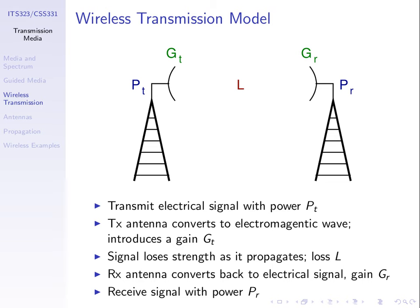Here's a more mathematical view of those components. We start with some signal at some power level PT, the transmit power. We'll see that the antenna effectively acts like an amplifier — it has some gain. When we analyze how far we can transmit, we treat the antenna like an amplifier with some gain. We transmit a signal, it goes into the antenna, and what comes out will be bigger — a higher power.